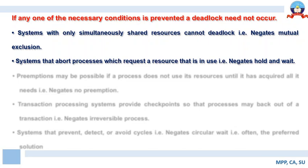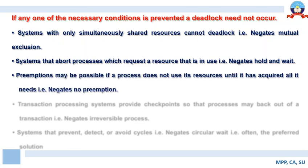The third condition involves preemption. Preemption may be possible if a process does not use its resources until it has acquired all its needs. One assumption is that until a process acquires all the resources it needs to perform an operation, it does not initiate execution. So when a process is holding a resource that is not being utilized, preemption should be possible to preempt that resource from the process.